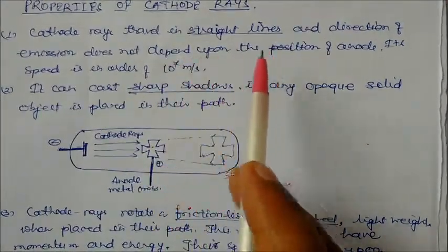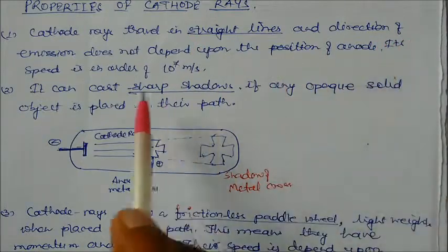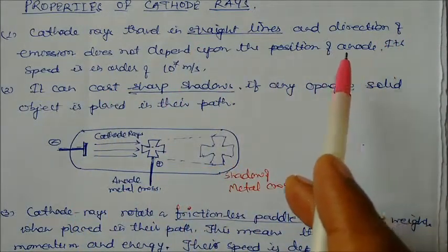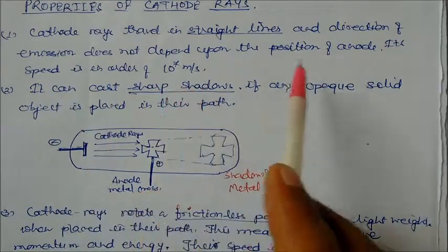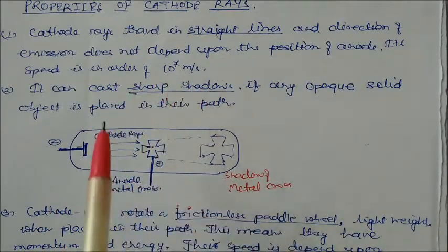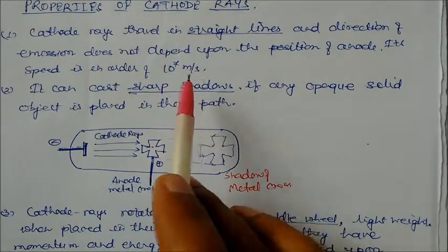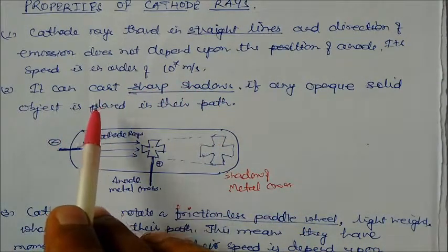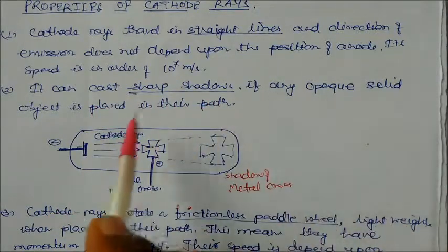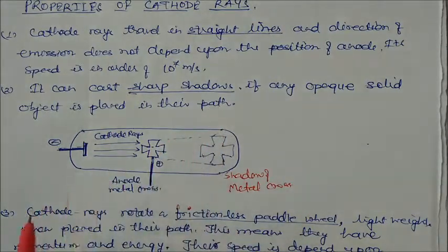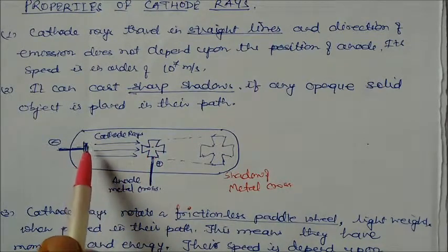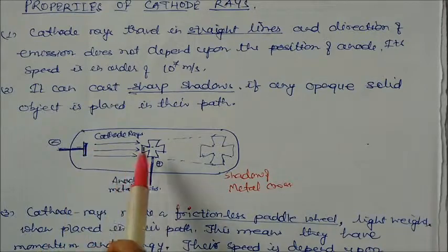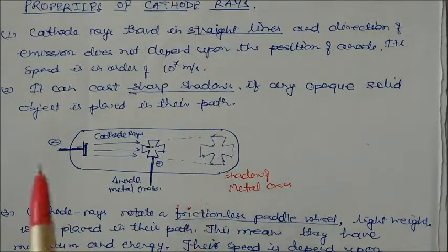Properties of cathode rays proved by J.J. Thomson: First, cathode rays travel in straight lines, and the direction of emission does not depend upon the position of the anode. Their speed is very high — about 10⁷ meters per second. Second, they can produce sharp shadows if any opaque solid object is placed in their path.